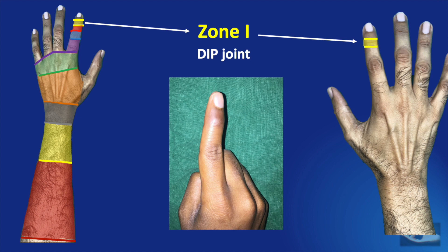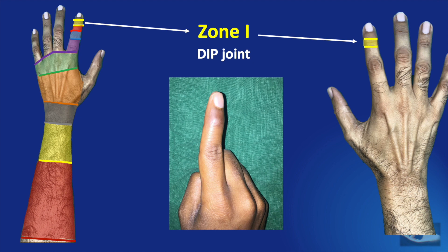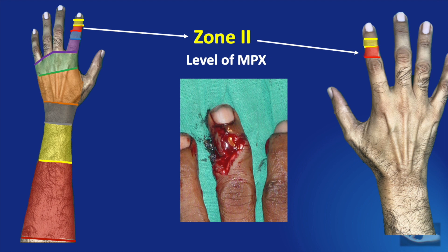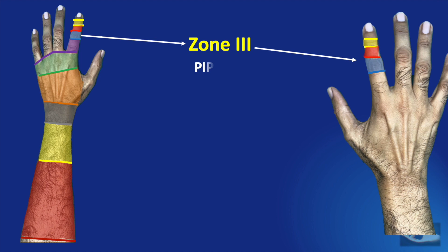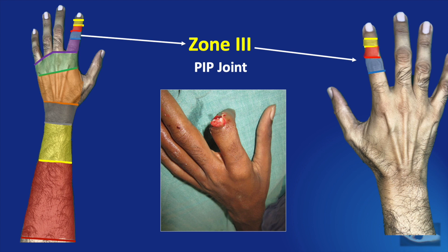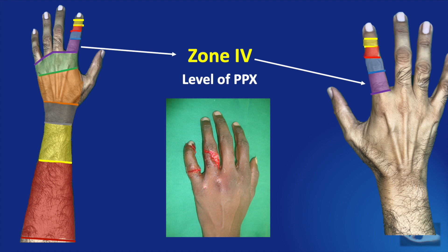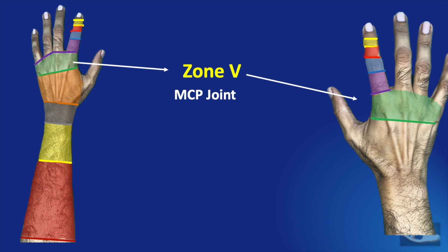Zone 1 injury may be open or closed. Zone 2 injury indicates injury to the extensor tendon on the dorsum of the middle phalangeal region of the finger. These injuries may or may not be associated with skin wounds or skin loss. Zone 3 extensor injury represents injury to the extensor expansion or apparatus, especially the central slip over the dorsal aspect of the proximal interphalangeal joint. Injury to the extensor apparatus over the dorsal aspect of the proximal phalangeal region of the finger is called zone 4 injury.